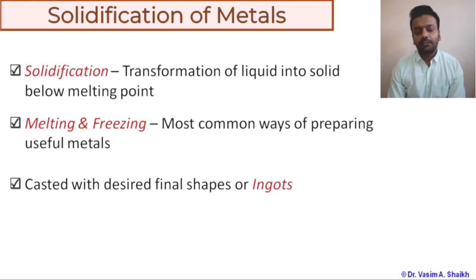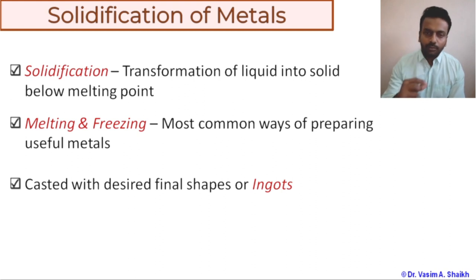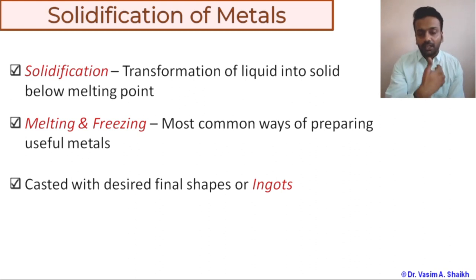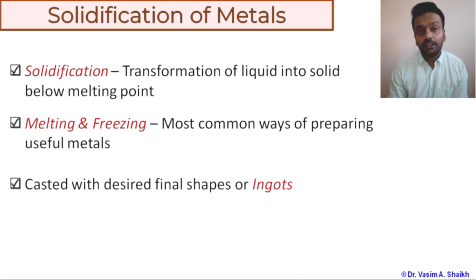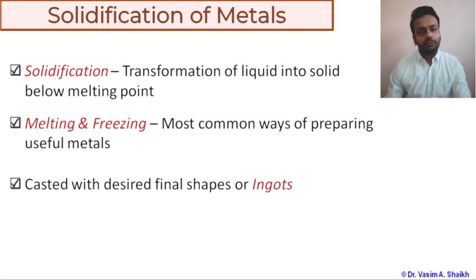Ingots are big chunks of metal pieces. From these metal pieces we make small products or use them as a raw material for making other useful final products. That is basically an introduction to solidification of metals, covering solidification, melting, and freezing.